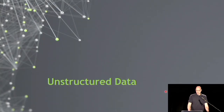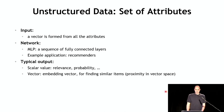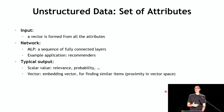Looking at unstructured data — starting with sets of attributes — the input to the neural network is a vector formed from all the attributes, and the network itself is an MLP or multilayer perceptron. An example application is recommendation neural networks, which take information about various items and users to make recommendations — what movie to watch next on YouTube or Netflix, or what song to play on Spotify. The typical output is either a scalar probability that an item is relevant, or a vector such as an embedding for similarity search.